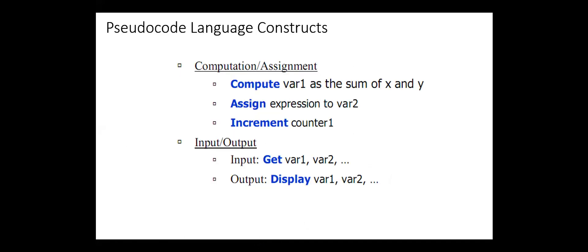Next, the pseudocode language constructs. For computation or assignment, we can use compute, assign, increment. For input, we can use get, variable 1, variable 2. For output, display, variable 1, variable 2, etc. You can use other words. For example, instead of get, you can use input. Instead of display, you can use output or print.